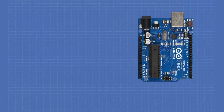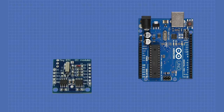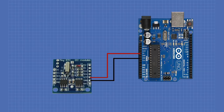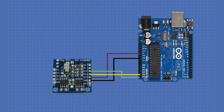Here's how we hook up the real-time clock module. You'll need an Arduino Uno and the TinyRTC module. Connect VCC on the module to the Arduino's 5-volt output, and ground to Arduino ground. The SDA connection goes to Arduino analog pin A4, or the dedicated SDA connection if your Arduino has one. The SCL connection goes to analog pin A5, or the SCL connection. That completes the hookup.